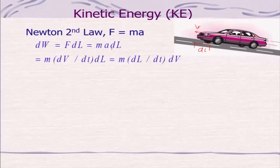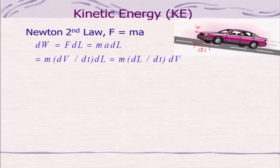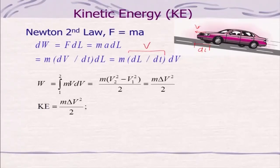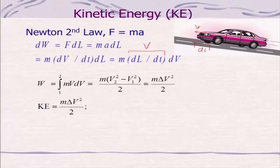Acceleration is nothing but dV/dt, and dL/dt is velocity. So the work done becomes mass times velocity times change in velocity, integrating from station 1 to 2, and since mass is constant, the work done is M·ΔV²/2, which is kinetic energy.